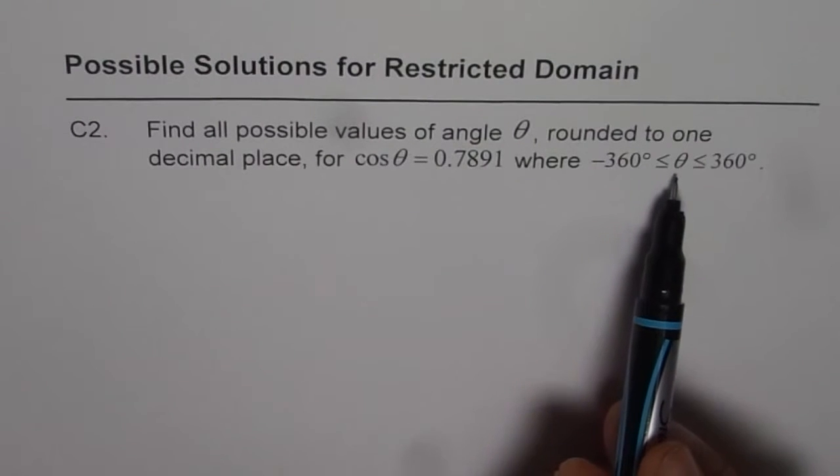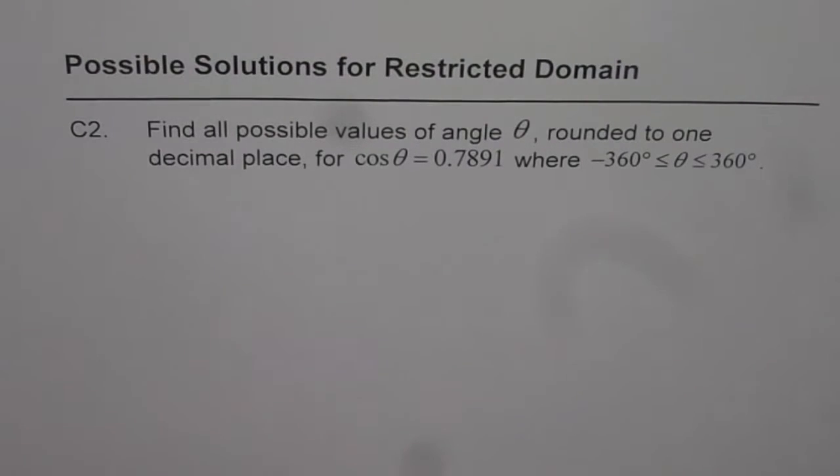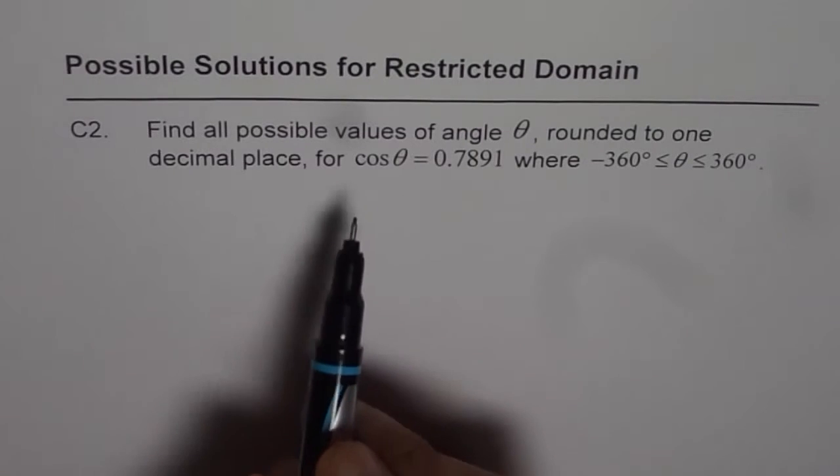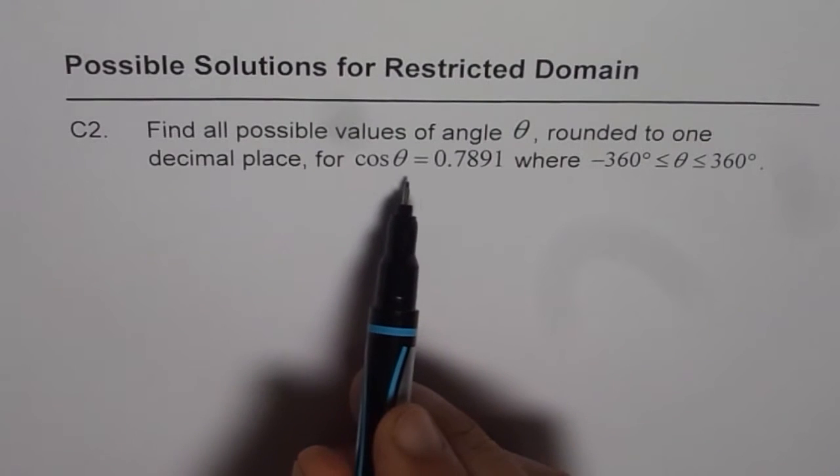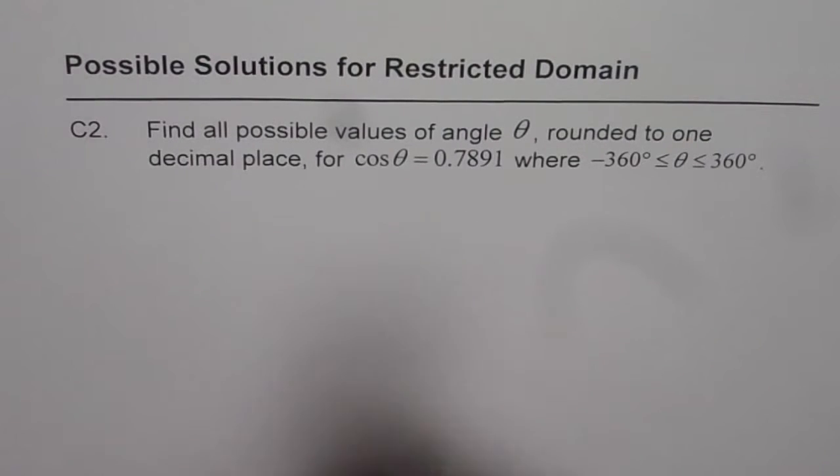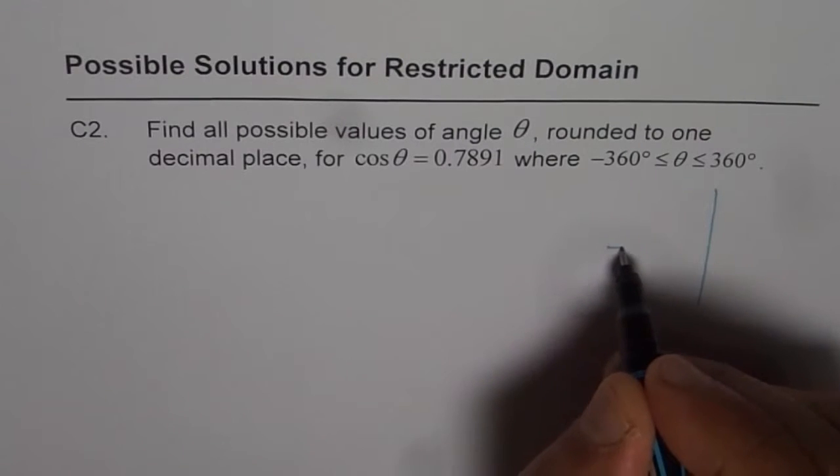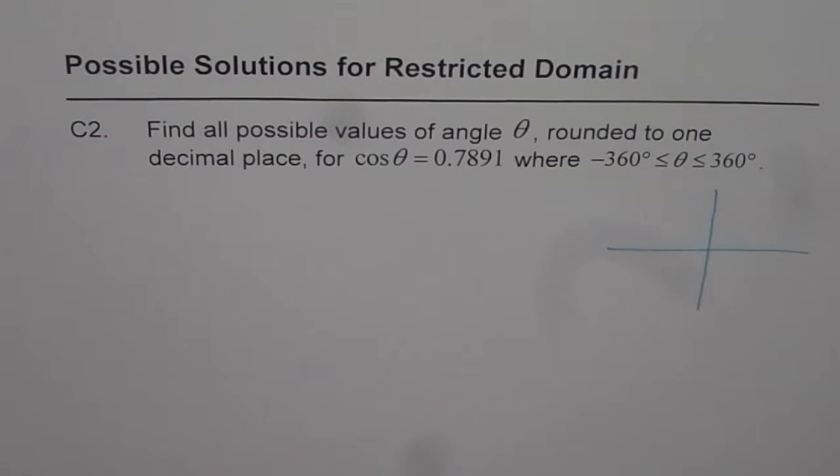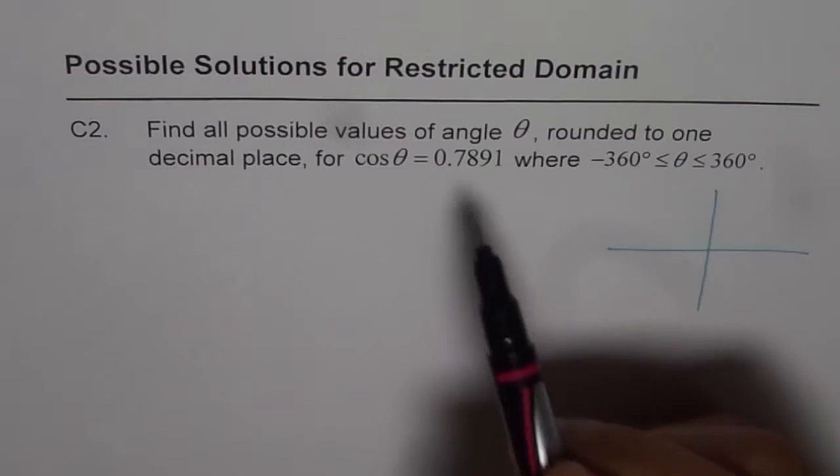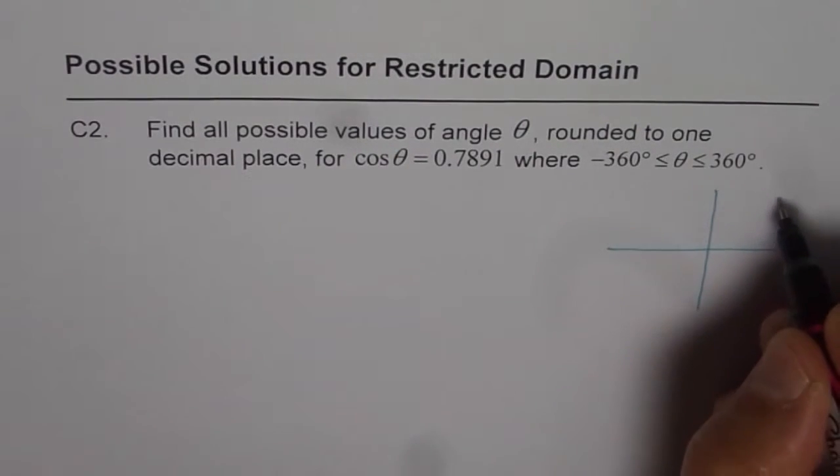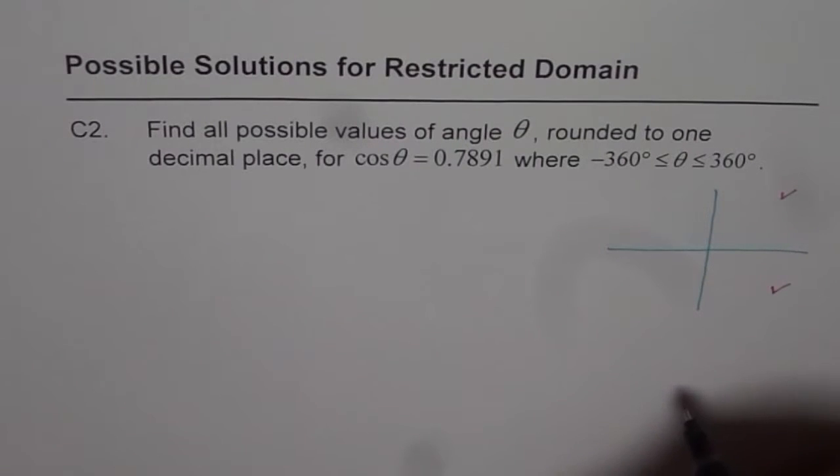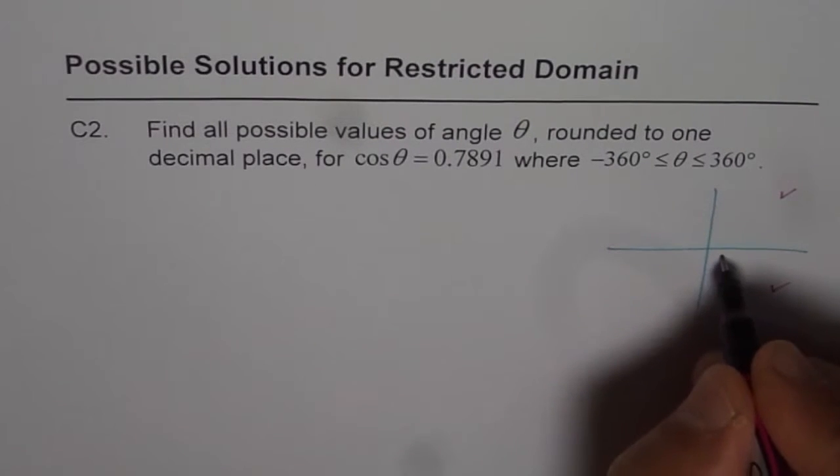Here we have a restricted domain since theta is the values between minus 360 and plus 360. Now when we say cos theta equals 0.7891, one thing is very clear that cos theta is positive. Now if cos theta is positive, then what can we conclude about the quadrant? That means that the principal angle theta should lie either in quadrant 1 or in quadrant 4. This you get from the cost rule.